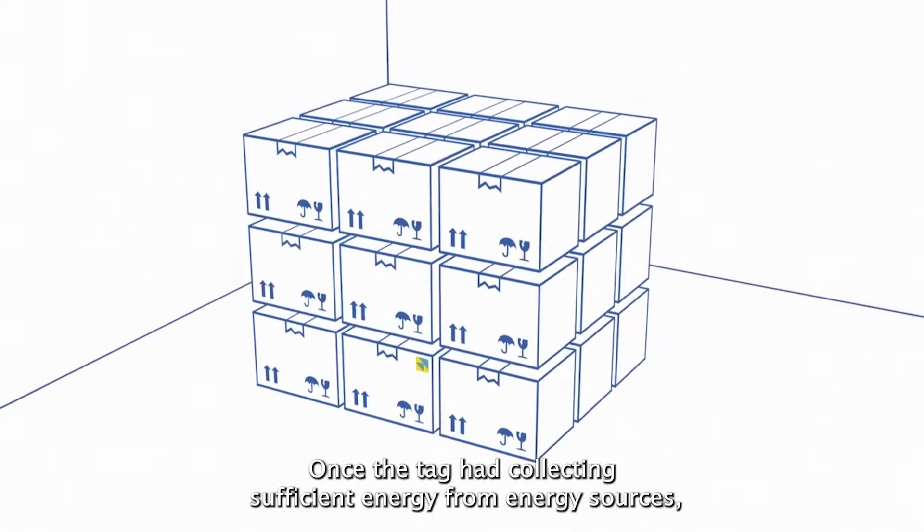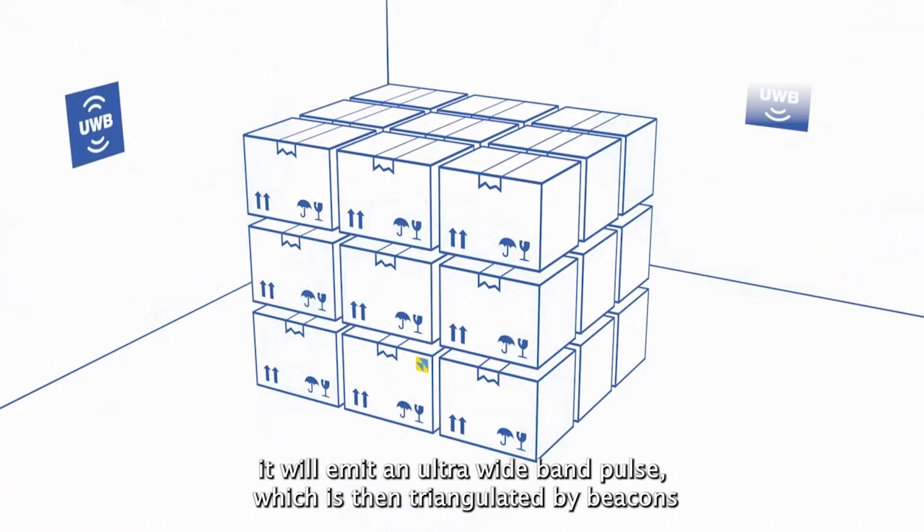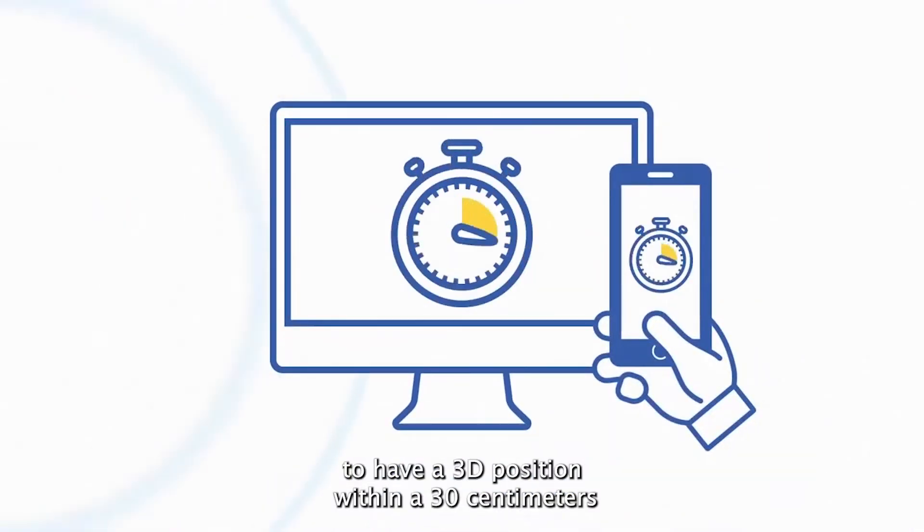Once the tag has collected sufficient energy from energy sources, it will emit an ultra-wideband pulse which is then triangulated by beacons to provide 3D positioning within 30 centimeters of accuracy.